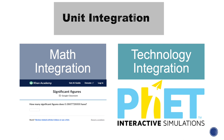We will have two integrations for this unit. One is a math integration using Khan Academy, and the second is a technology integration using PhET Interactive Simulations. For the first integration, we will aim to improve your understanding of chemical calculations using Khan Academy. It will be used to practice solving various problems, including finding the concentration of a solution or determining the amount of a particular element in a compound. Scientific notation and significant figures will also be covered.